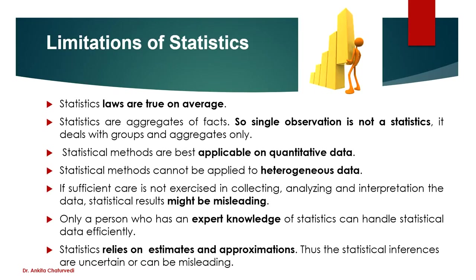Coming to the limitations of statistics. First, statistics laws are true on averages — because statistics work more or less on averages. Second, statistics are an aggregate of facts; if there is single data, you cannot apply statistics — you need a group of data. Third, statistical methods are best applicable to quantitative data, not qualitative data.